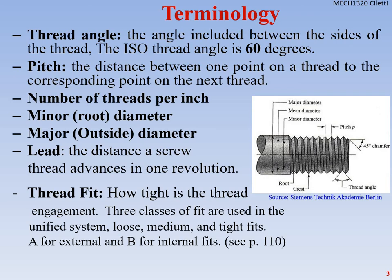We can see where that is on the diagram. If we look at the thread angle on the picture, the thread angle shown is at 45 degrees — that's the chamfer angle. The actual thread angle is shown at the bottom of the picture; that's the angle between the two threads. The pitch is the distance between threads — looking from the top of one thread to the top of the next.